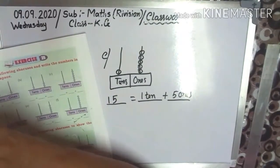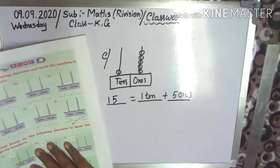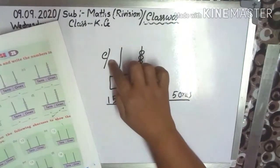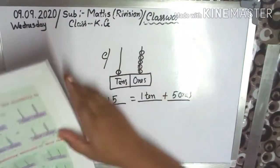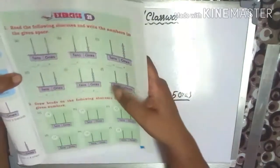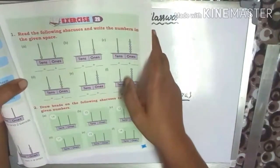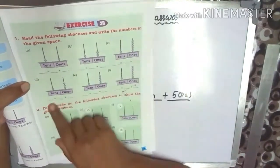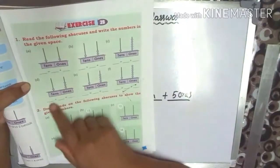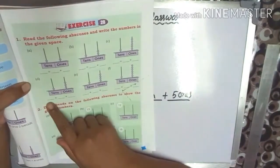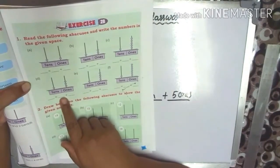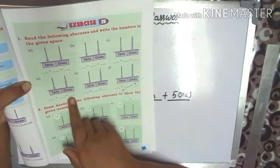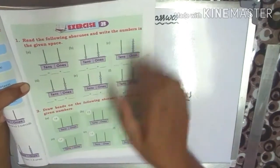Number 1, answer C. Next, D. See the tens and ones. Write here 1 and 3: that is 13. So you write: 1 ten plus 3 ones equals 13.